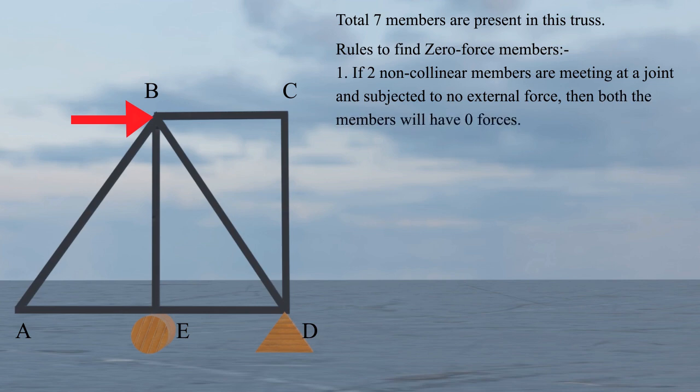The first rule is that if two non-collinear members are meeting at a joint and subjected to no external force and reactions, then both members have zero member forces. If we apply this rule in this structure, at joint A and joint C, these are the two non-collinear members and no external force is applied.